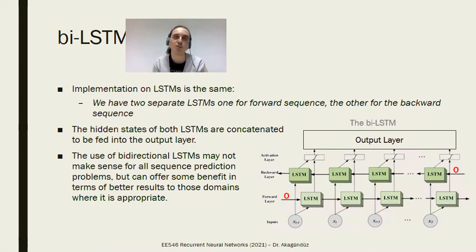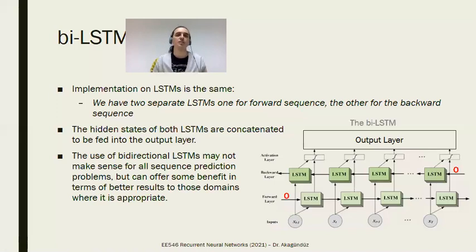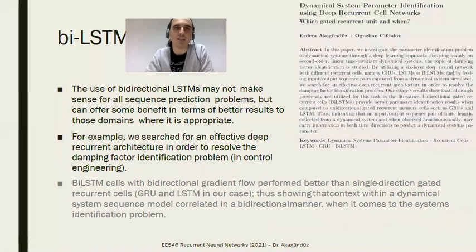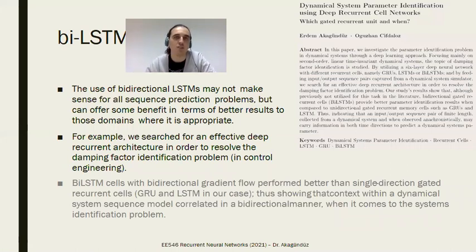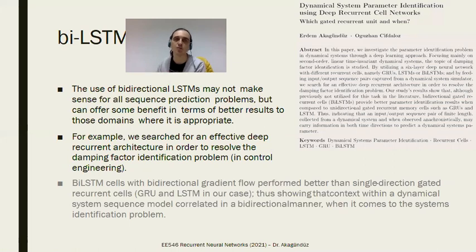The use of bidirectional LSTMs may not make sense for all sequence prediction problems, but they may offer better results for domains where it is appropriate. We recently tried something related: we were trying to find a parameter of second-order control systems — the damping coefficient zeta, related to friction. We fed input-output sequences and did a comparative study using GRUs, LSTMs, and BLSTMs. BLSTMs were much better across many different hyperparameter combinations — so this appears to be one of the areas where they excel.